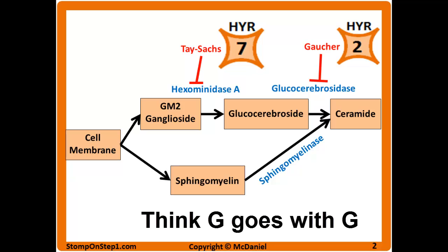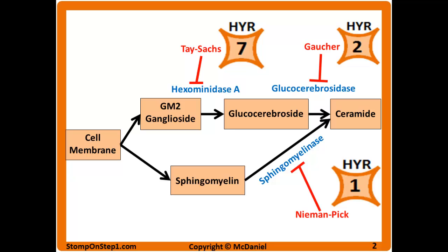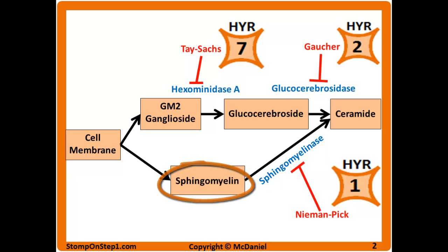Gaucher disease is a deficiency of the glucocerebrosidase enzyme, which leads to a buildup of glucocerebroside. Niemann-Pick is a deficiency of sphingomyelinase, which causes a buildup of sphingomyelin.